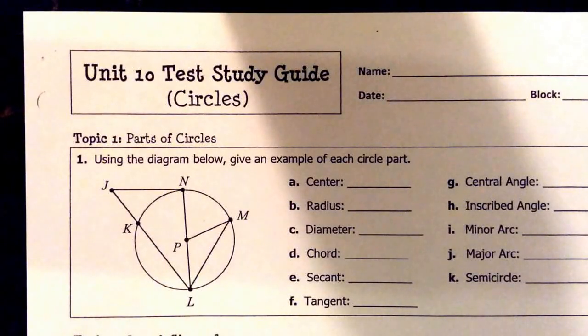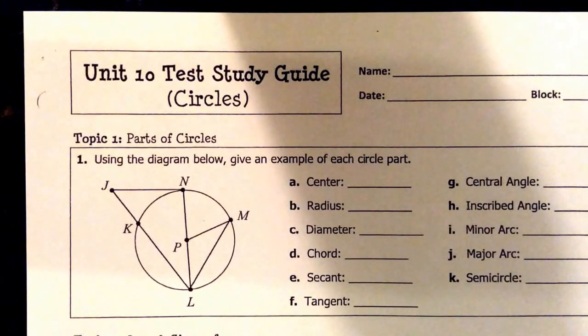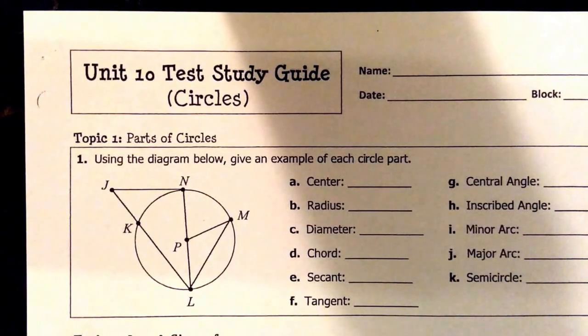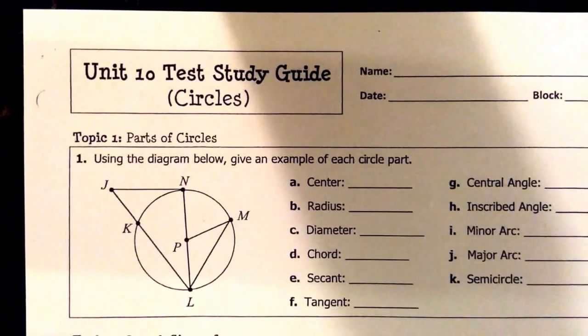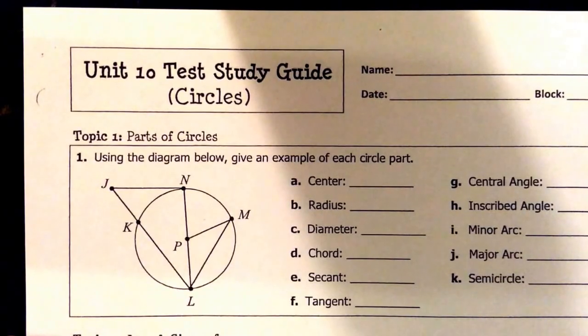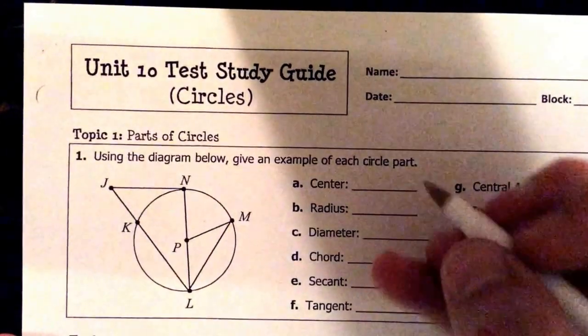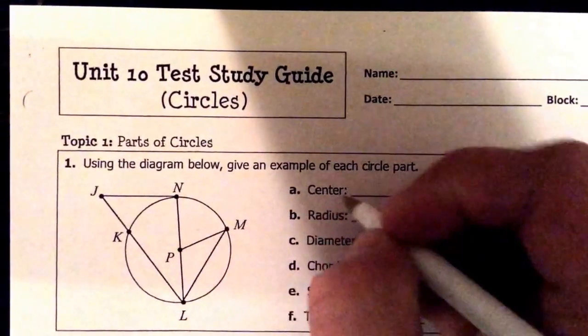In this first part of our unit study guide for circles, I'm going to be going through the first page where we're going to talk about circle parts and also area and circumference along with finding arc measures around a circle. So in our first problem, we are going to need to give an example of each circle part. So the center of our circle is in the very middle, which is P.